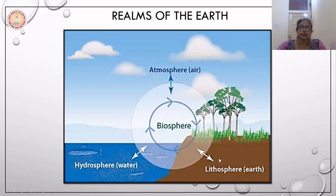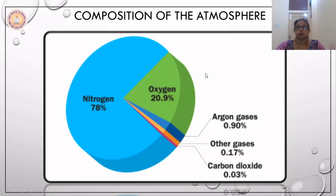As far as the atmosphere is concerned, it is the blanket of air which surrounds the earth. And because the earth has got a very strong gravitational pull, the atmosphere is pulled towards the earth. The atmosphere has got certain compositions and this you can see on the slide which is being displayed on the screen.